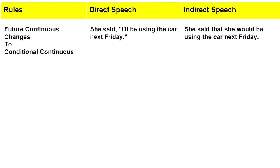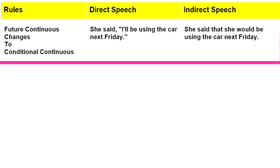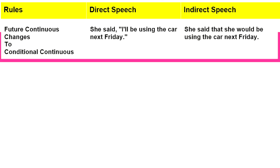Ninth rule: future continuous changes to conditional continuous. For example: she said, 'I will be using the car next Friday.' In indirect speech: she said that she would be using the car next Friday.